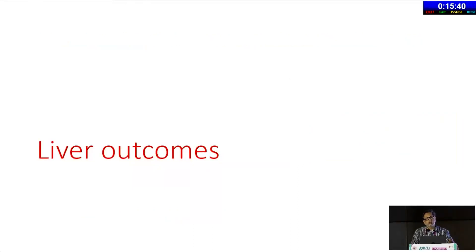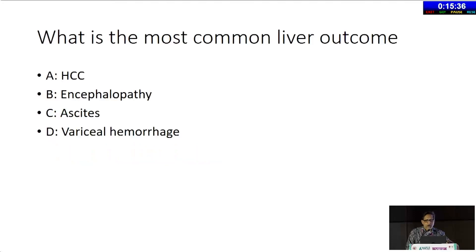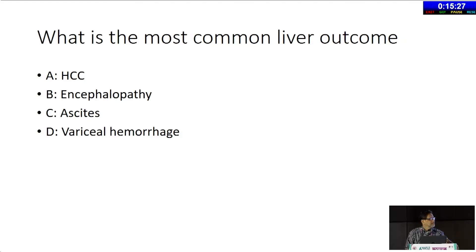I want to walk you through the patient's journey in terms of liver outcomes. Which is the most common liver outcome: hepatocellular carcinoma, encephalopathy, ascites, or variceal hemorrhage?